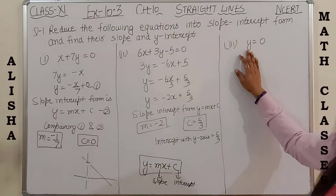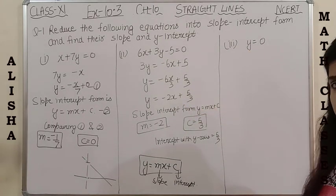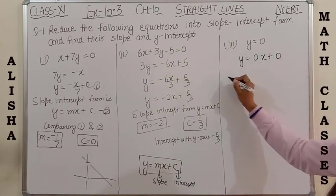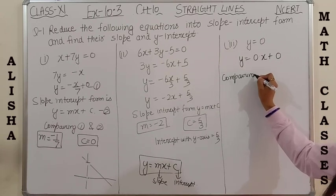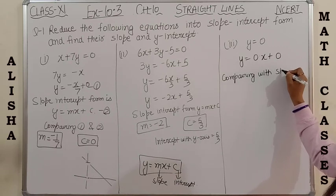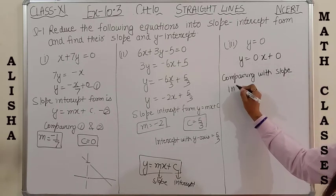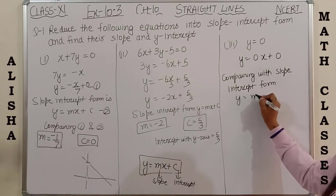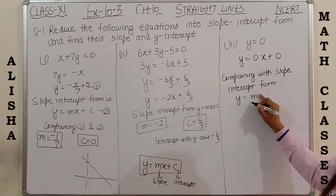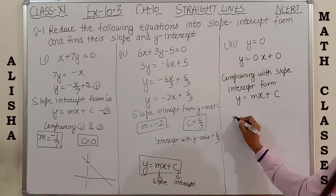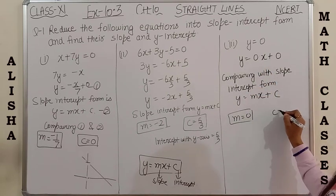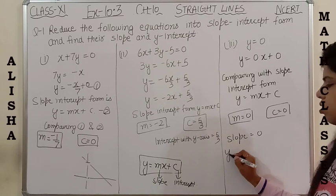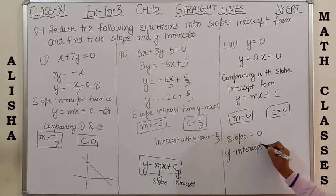The third part is the easiest — the equation is already in the desired form y = mx + c. It can be written as 0·x + 0. Comparing with slope-intercept form, m = 0 and c = 0. So slope is 0 and y-intercept is also 0. Please note this down.